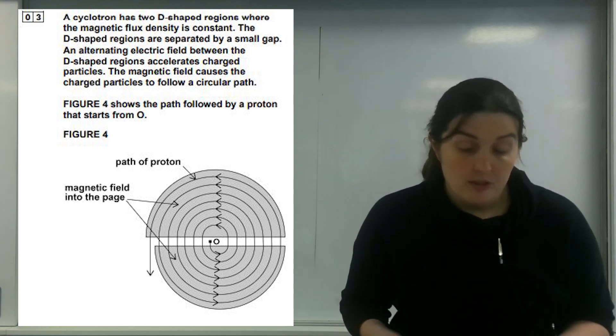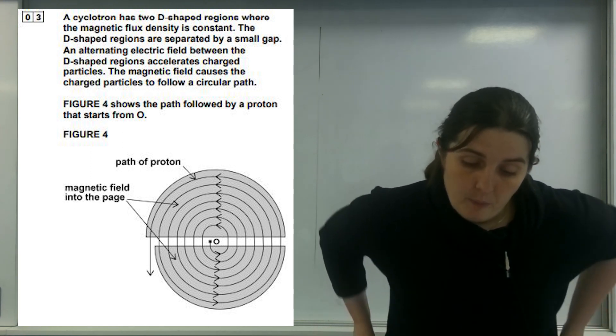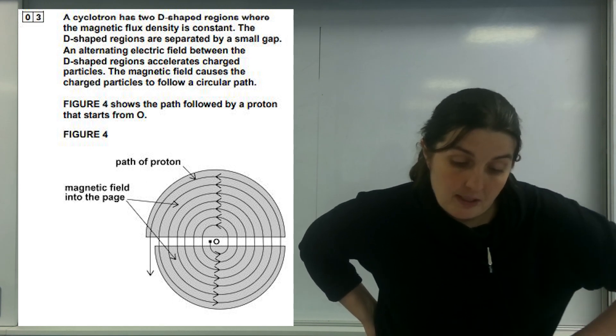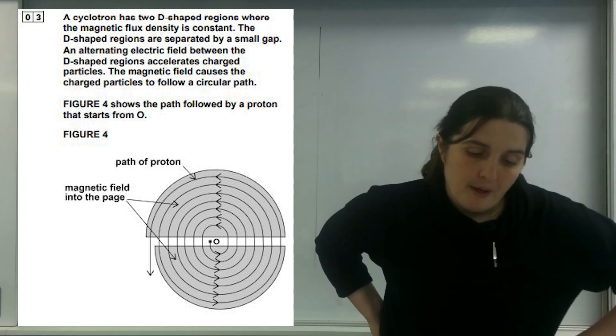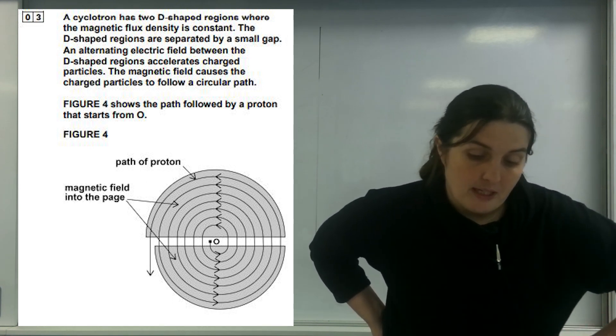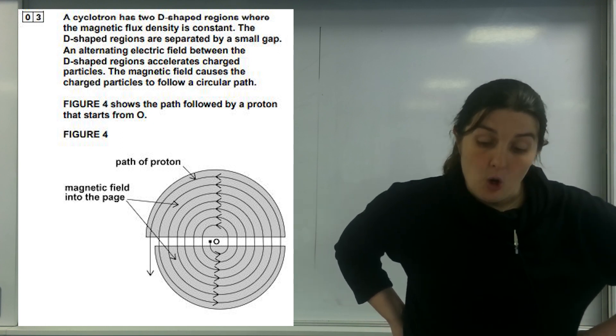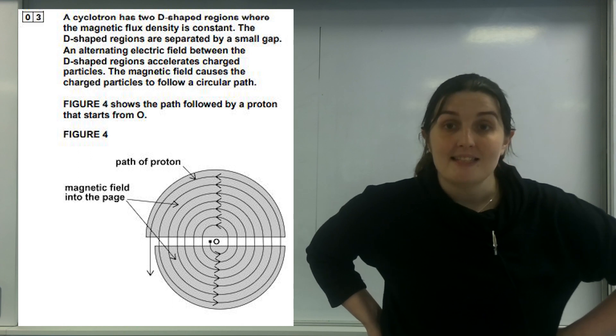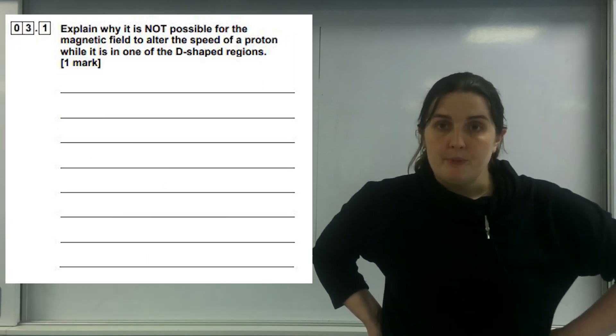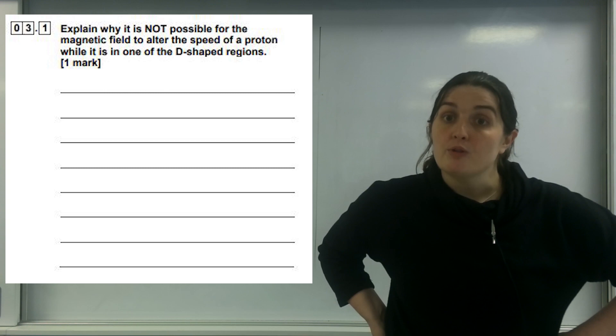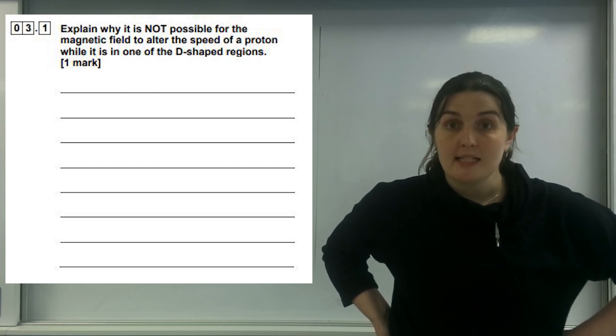A cyclotron has two D-shaped regions, they're D's because they're D-shaped, where the magnetic flux density is constant. The D-shaped regions are separated by a small gap and an AC current field is between them. Explain why it is not possible for the magnetic field to alter the speed of a proton while it's in the D-shaped regions. This is quite simple. The only way you can adjust velocity is to give it kinetic energy.